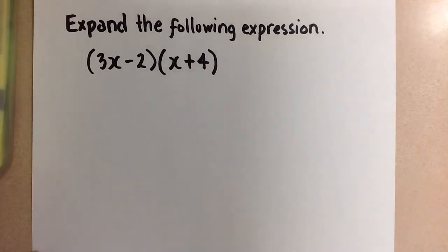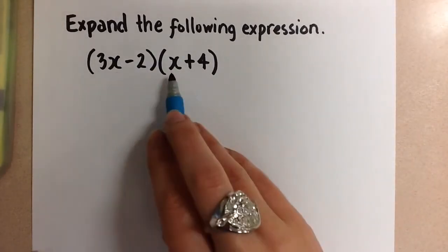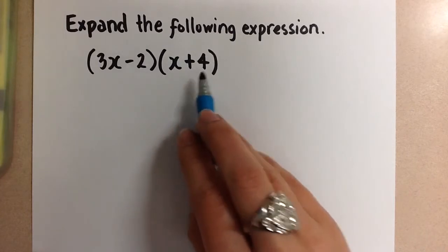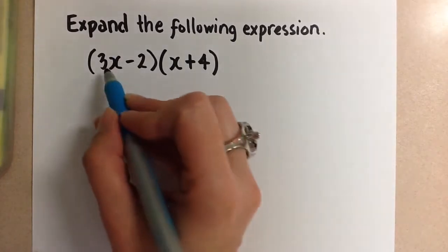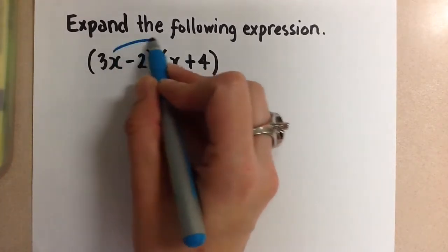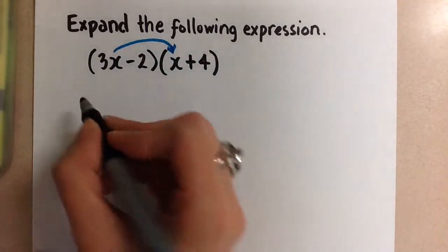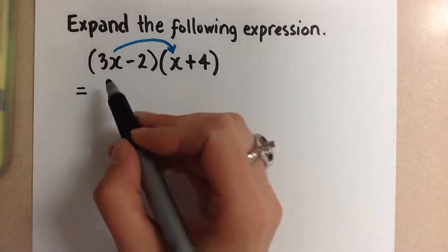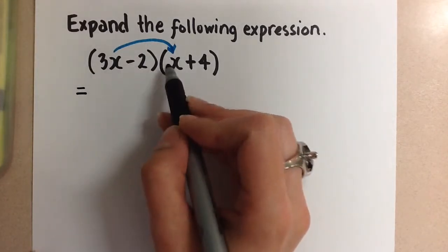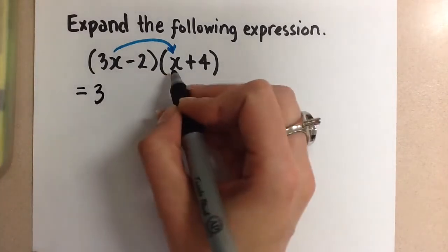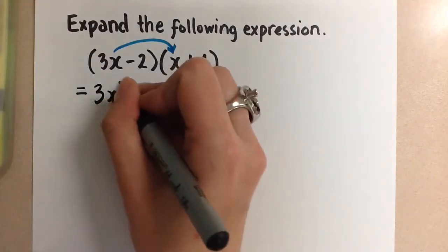This means that we're going to multiply both terms here with both terms in here. So we're going to start by doing the first two terms. 3x times x. And first we multiply the coefficients, so this is like 3 times 1, which is 3, and then x times x, which is x squared.